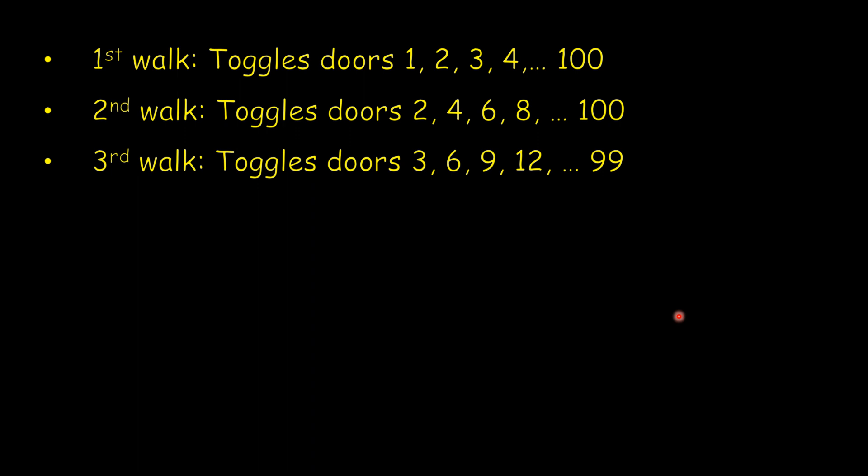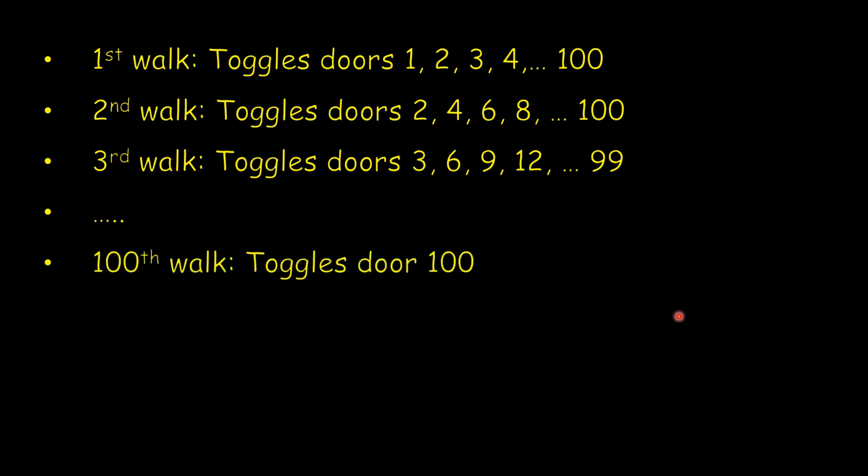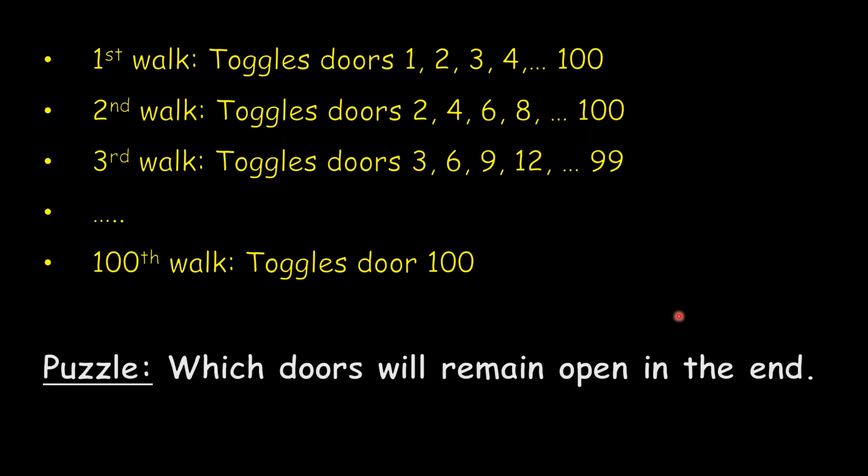In the fourth walk he toggles 4, 8, 12, 16 all the way up to 100, and so on. Finally, in the 100th walk he will just toggle door number 100. The question is: which doors remain open after this entire experiment?